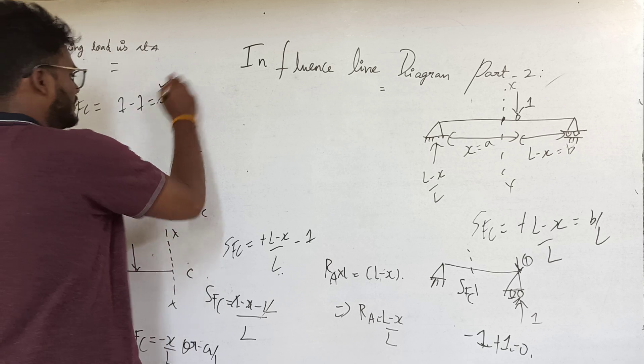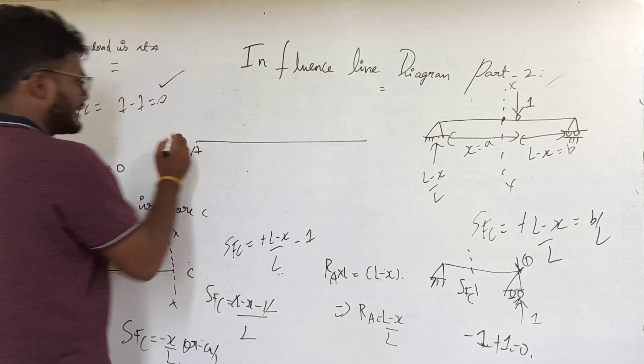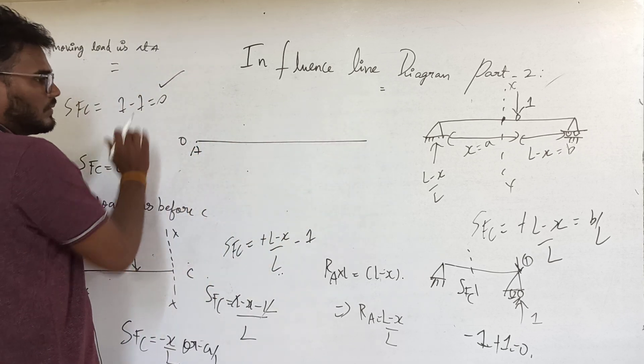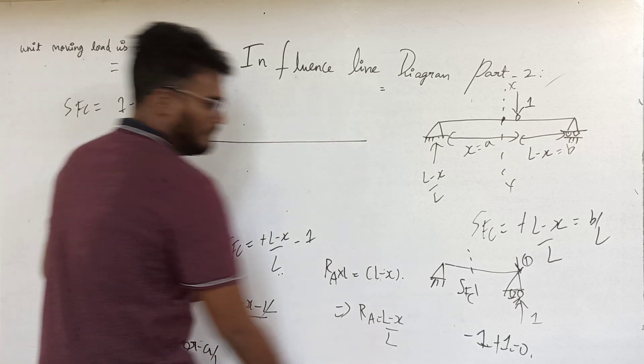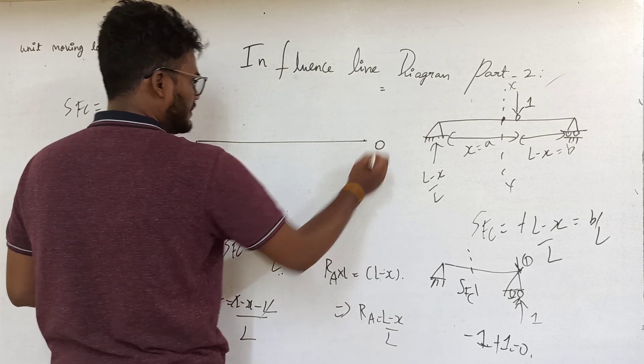At A, the shear force at C is 0. At B, the shear force at C is also 0. Just before C, the shear force is minus A by L.